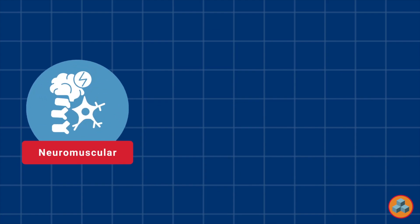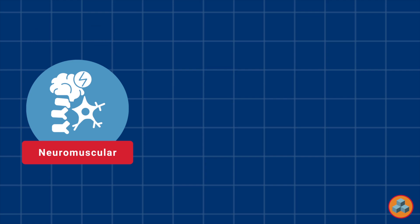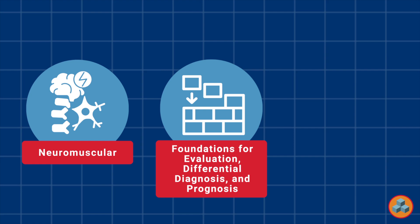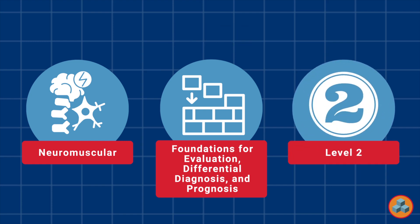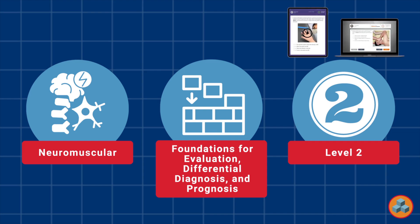System classification: This question is a neuromuscular and nervous systems question, which represents approximately 24% of all exam items. Content outline classification: This question is a foundations for evaluation, differential diagnosis, and prognosis question, which represents approximately 33% of all exam items. Level classification: This is a level 2 question, since it requires students to integrate numerous pieces of information or to apply knowledge in a given clinical scenario. Remediation of level 2 questions occurs by increasing flexibility with academic content and by carefully analyzing decision-making processes when answering applied examination questions.